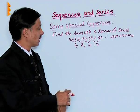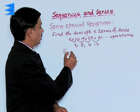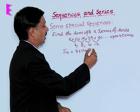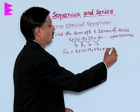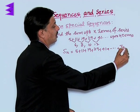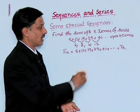The procedure, the algorithm to find the sum: S_n equals 5 plus 11 plus 19 plus 29 plus 41 plus dot dot dot. Let us suppose its nth term is T_n. This is T_n, the last term.